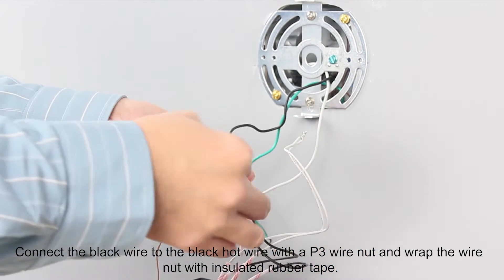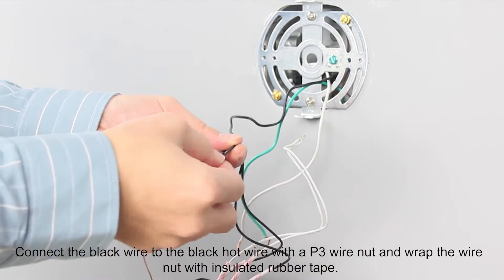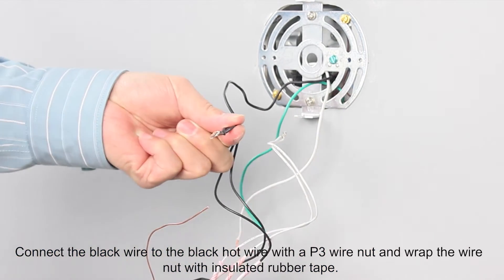Connect the black wire to the black hot wire with a P3 wire nut and wrap the wire nut with insulated rubber tape.